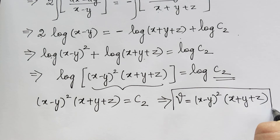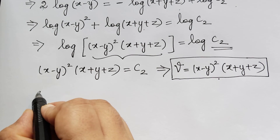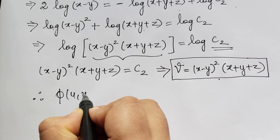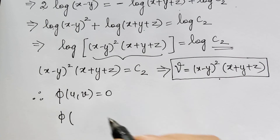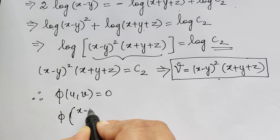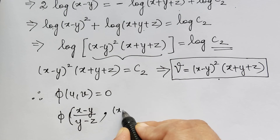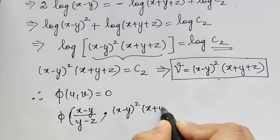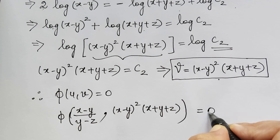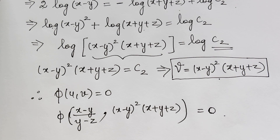Therefore the second solution is v equals x minus y whole squared multiplied by x plus y plus z. We have now obtained both solutions u and v. The general solution is phi(u, v) equals 0, which is phi of (x minus y)/(y minus z) comma (x minus y)² times (x plus y plus z) equals 0. This is the general solution for the given Lagrange's linear partial differential equation. I hope you understood this problem. Thank you.